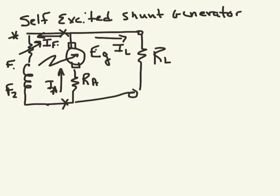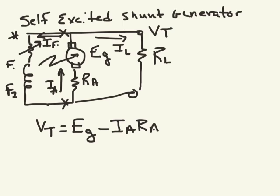As far as the terminal voltage is concerned here, V-terminal is nothing more than essentially what it was before, except this time we'll say V-terminal equals EG minus IA RA. That's true, exactly as it was before, but in the last case, the load current IL was equal to the armature current.